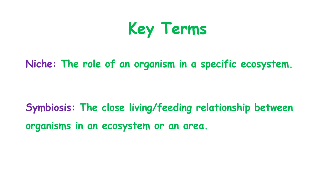Symbiosis, which we will deal with in another lesson, is the close living or feeding relationship between organisms within an ecosystem. For example, predator versus prey — who eats what. It's not always a feeding relationship but also a living relationship. For example, dogs and fleas: the fleas don't eat the dog necessarily, but they are parasites to the dog. So the living arrangement and feeding arrangement altogether is referred to as symbiosis — it covers both the living and feeding relationships of organisms within that ecosystem.